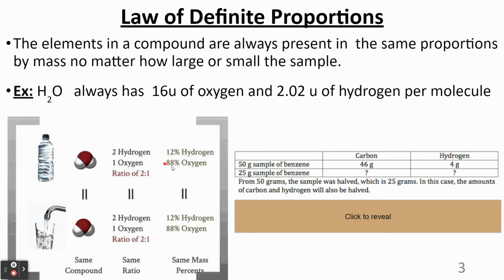So wherever you find water, any sample is going to have 88% oxygen and 12% hydrogen. And that's what the law of definite proportion is. It basically says that the elements of the compound are always present in the same proportion by mass, no matter how large or small the sample.